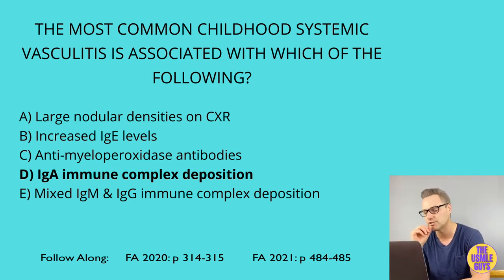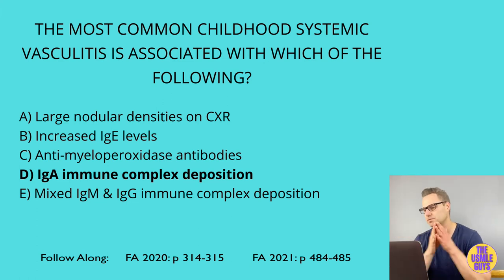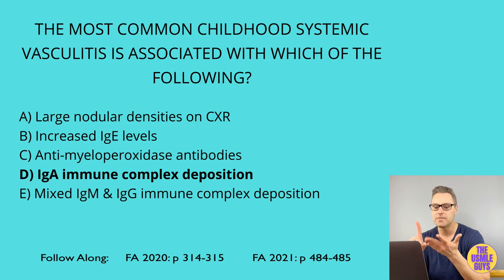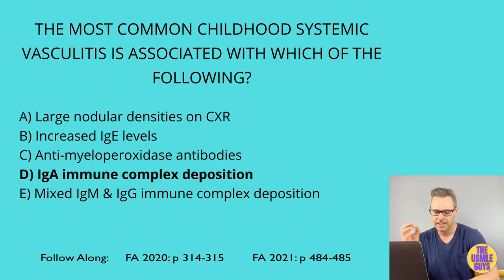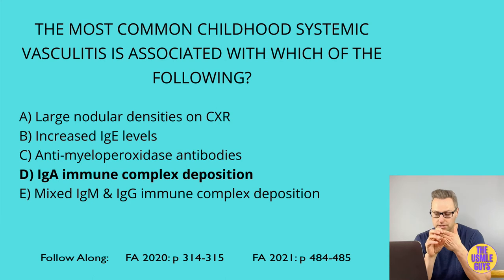Let's talk about other small vessel vasculitis conditions. Option A — large nodular densities on chest x-ray — is associated with granulomatosis with polyangiitis, or Wegener granulomatosis. This affects the respiratory tract and kidneys. In the upper respiratory tract: chronic sinusitis, nasal septum perforation, mastoiditis, and otitis media. In the lower respiratory tract: cough, dyspnea, and hemoptysis. In the kidneys: hematuria and red cell casts. The classic triad is necrotizing glomerulonephritis, focal necrotizing vasculitis, and necrotizing granulomas in the lungs and upper airways.